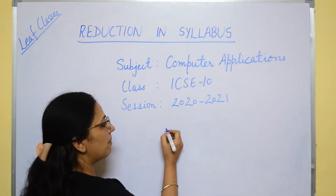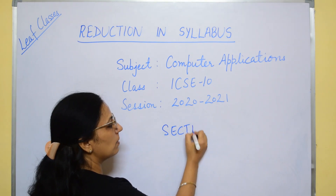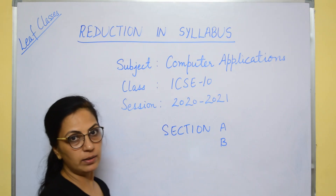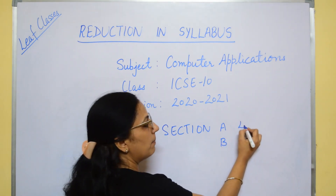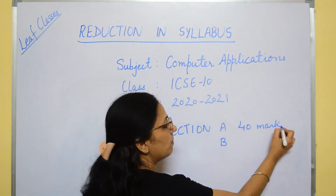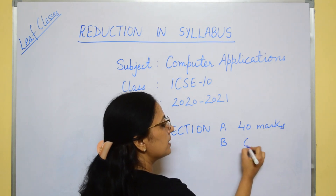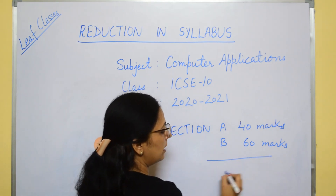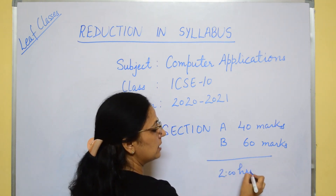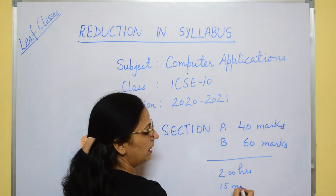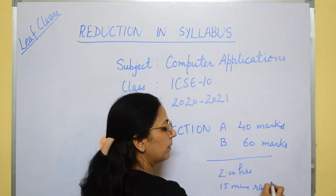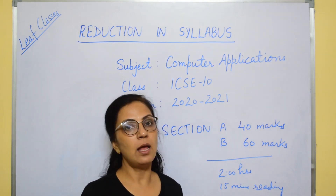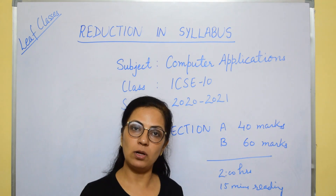If we talk about section A and section B, these two sections will remain the same as they were. Section A will be of 40 marks and section B is of 60 marks for this session also. There is no change in the timing — you have 2 hours writing time and 15 minutes reading time. Now, a few topics are removed which were there in the previous session, and one by one I will tell you all these topics.